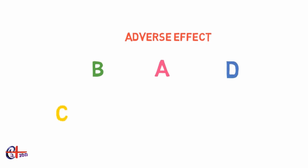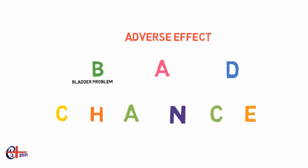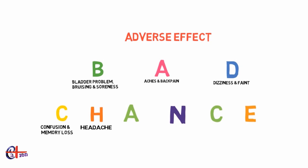Now let's discuss the adverse effects of anesthetics. An easy mnemonic to remember them is BAD CHANCE: B for bladder problems, bruising, and soreness; A for aches and back pain; D for dizziness and fainting; C for confusion and memory loss; H for headache; A for — ; N for nausea and vomiting; C for chest pain or chest infection.